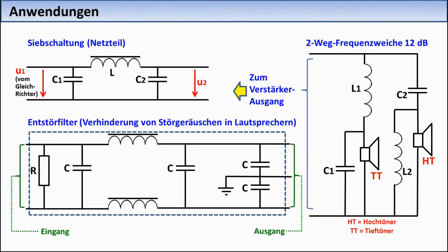To understand these filter circuits, you only need to know: series-connected coils pass low frequencies better than high ones. Parallel-connected capacitors short-circuit high frequencies more readily than low ones. Parallel-connected coils short-circuit low frequencies more readily than high ones, and finally, series-connected capacitors pass high frequencies better than low ones.